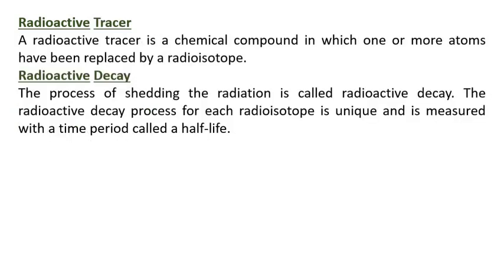Radioactive Tracer: A radioactive tracer is a chemical compound in which one or more atoms have been replaced by a radioisotope. Radioactive Decay: The process of shedding radiation is called radioactive decay. The radioactive decay process for each radioisotope is unique and is measured with a time period called a half-life.